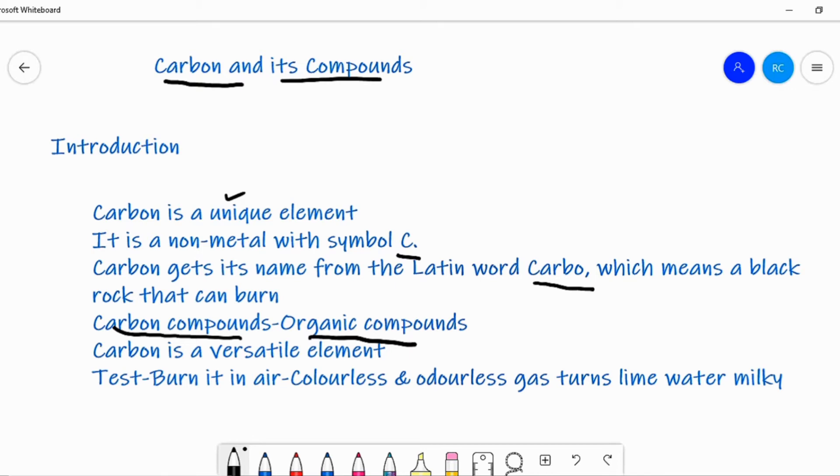Industrial products like soaps, detergents, rubber, fibers, plastics, dyes, perfumes, cosmetics, etc. are all carbon compounds.